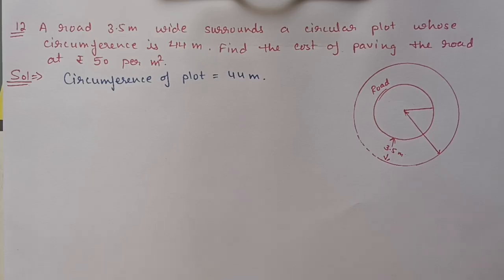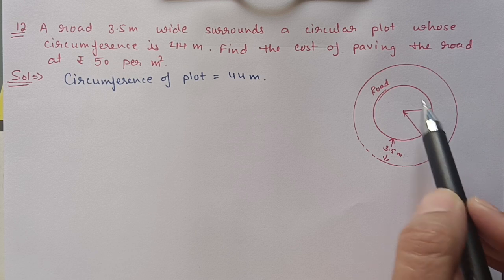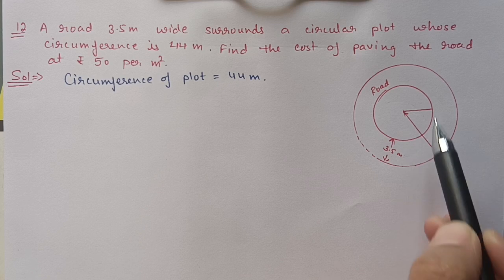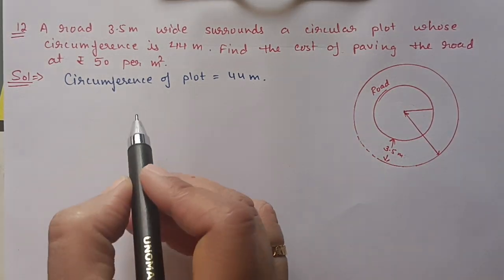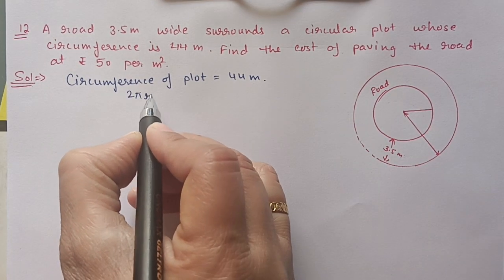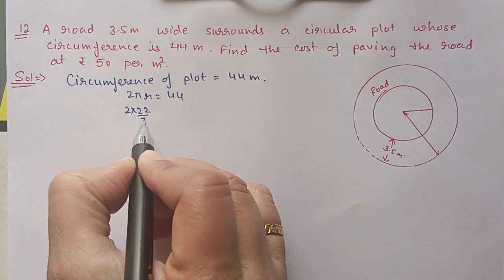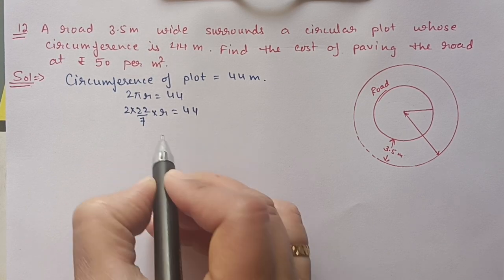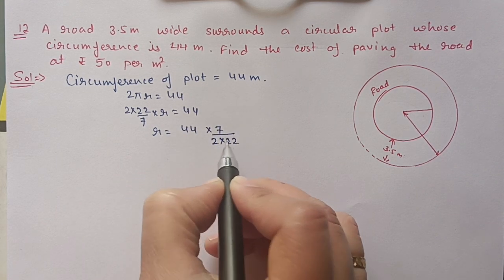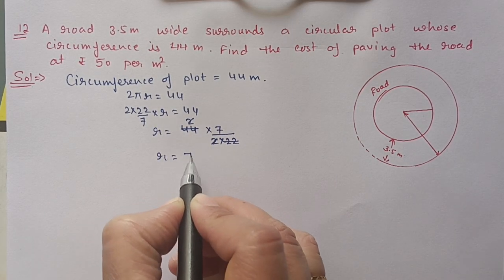Next we have Question 12. A road 3.5 meters wide surrounds a circular plot whose circumference is 44 meters. Find the cost of paving the road at the rate of 50 rupees per meter squared. The circumference of the plot is 44 meters, so 2πr = 44. Solving: 2 × (22/7) × r = 44, giving r = 7 meters.